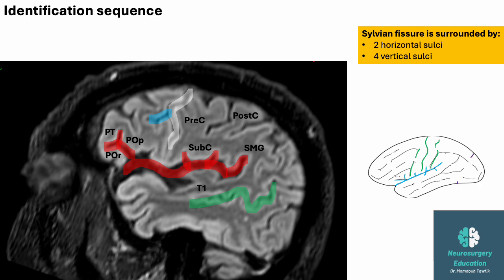The superior frontal sulcus meets the first, or most anterior, of the vertical sulci, which is the pre-central sulcus. More posteriorly is the central sulcus and then the post-central sulcus above the sylvian fissure. The last of the vertical sulci, located behind the sylvian fissure, separates the supramarginal gyrus from the angular gyrus. It's called the intermediate sulcus of Jensen.